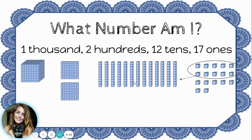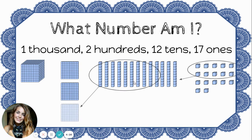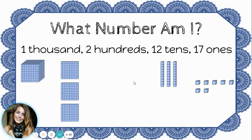I also have too many tens for the tens place. So just like we did with the ones, let's take ten of those tens and bundle them together to make a hundred. Now let's see what's left. I have one thousand, now I have three hundreds, I have three tens and seven ones. That's the number one thousand three hundred thirty-seven.